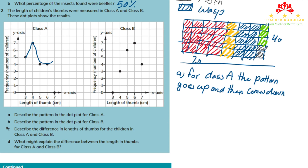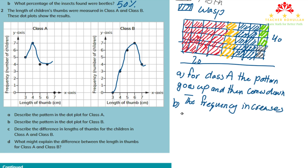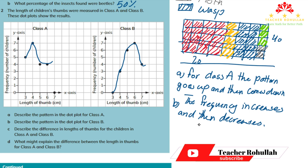For part b, describe the pattern in the dot plot for class B. There are no students in class B with a thumb length of 3 centimeters, so starting from 3 it is zero. Then the frequency increases and then decreases. Both statements — pattern goes up then comes down, and frequency increases then decreases — mean the same thing.